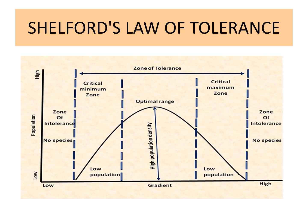In the zone of tolerance you can find individuals where reproduction is successful. But when the temperature is lower than the minimum — to the left of the zone of tolerance — there is a zone of intolerance where the organism cannot tolerate that very low temperature and no species will exist. Similarly, on the right side of the graph there is again a zone of intolerance and no species will exist.